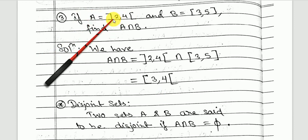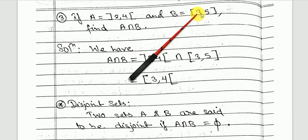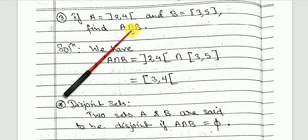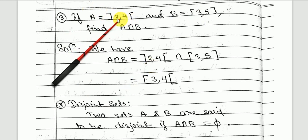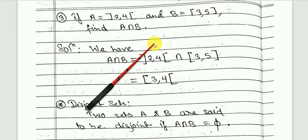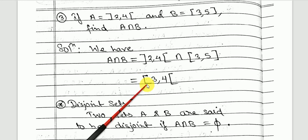Next, we have set A as the open interval (2, 4) and set B as the closed interval [3, 5]. A contains all real numbers strictly between 2 and 4, with 2 and 4 excluded. B contains all real numbers between 3 and 5, with 3 and 5 included. So A intersection B = [3, 4), closed at the left and open at the right.